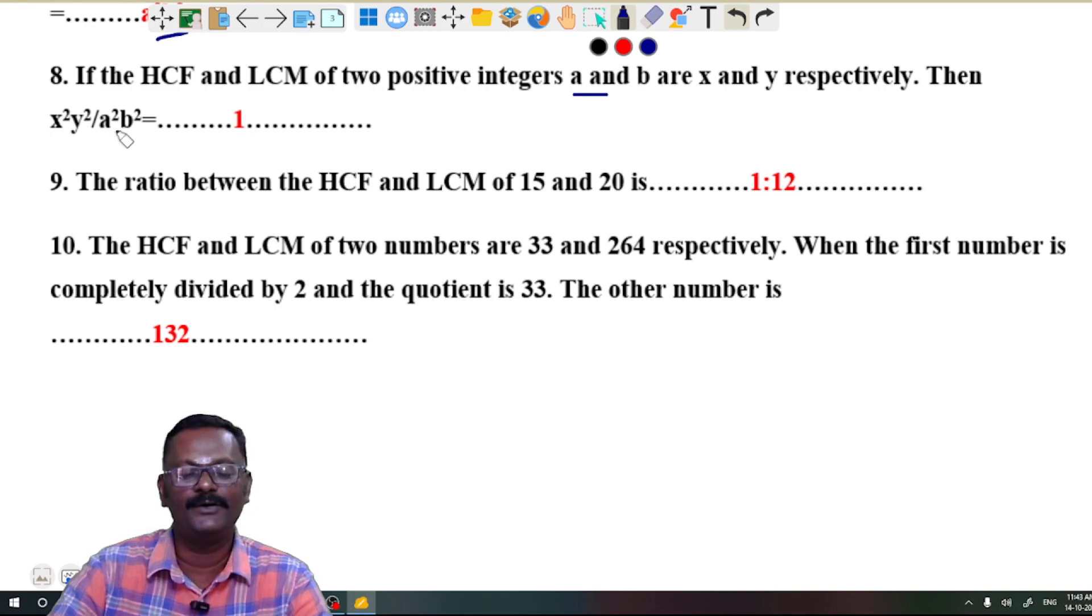Question 9: The ratio between the HCF and LCM of 15 and 20 is 1:12.